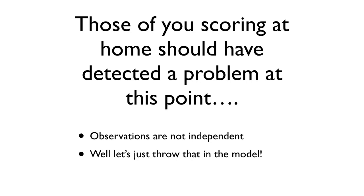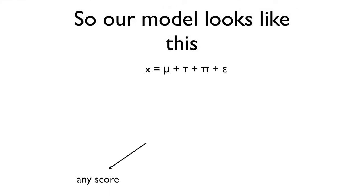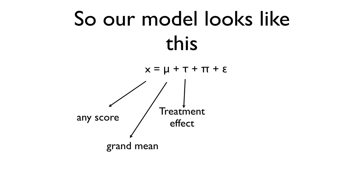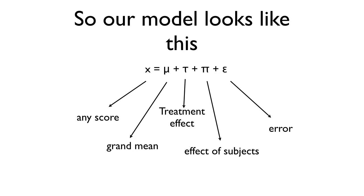Well, let's just put that in the model. We're going to take our structural model for analysis of variance and build that in. Our model now looks like this: X equals mu plus tau plus pi plus epsilon. Any score equals the grand mean plus the treatment effect plus — and this is the extra thing I've added — the effect of subjects, pi. I think of pi as for people. We're just building in that there's an effect of subjects.